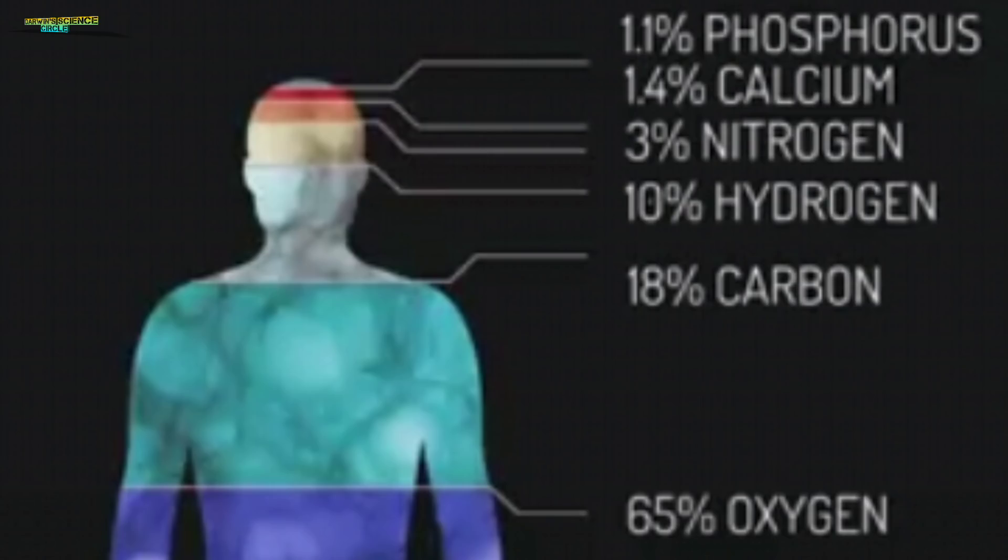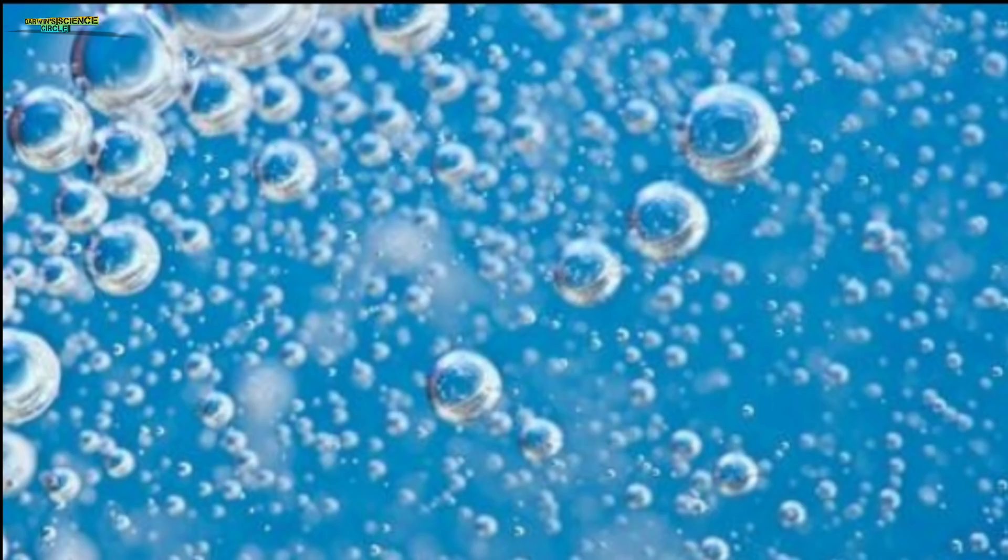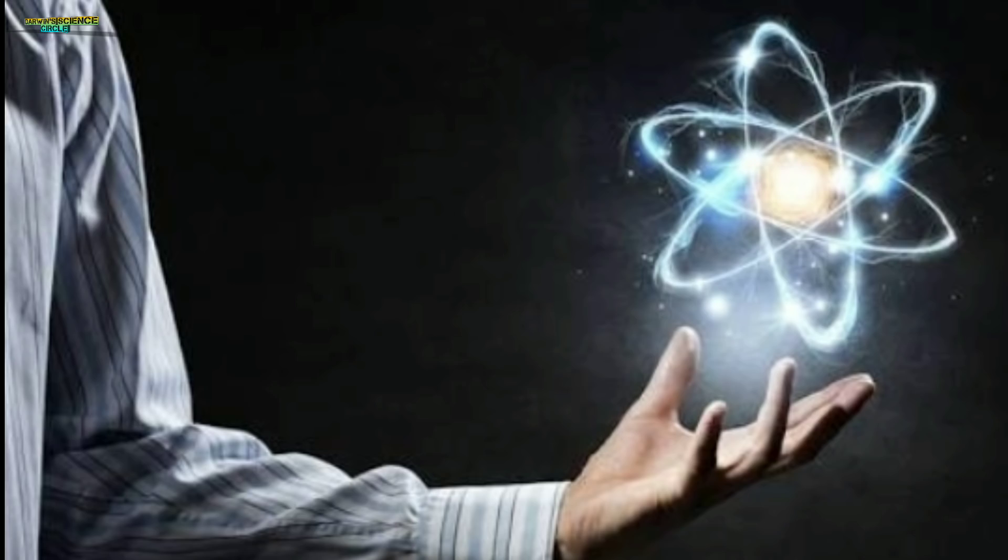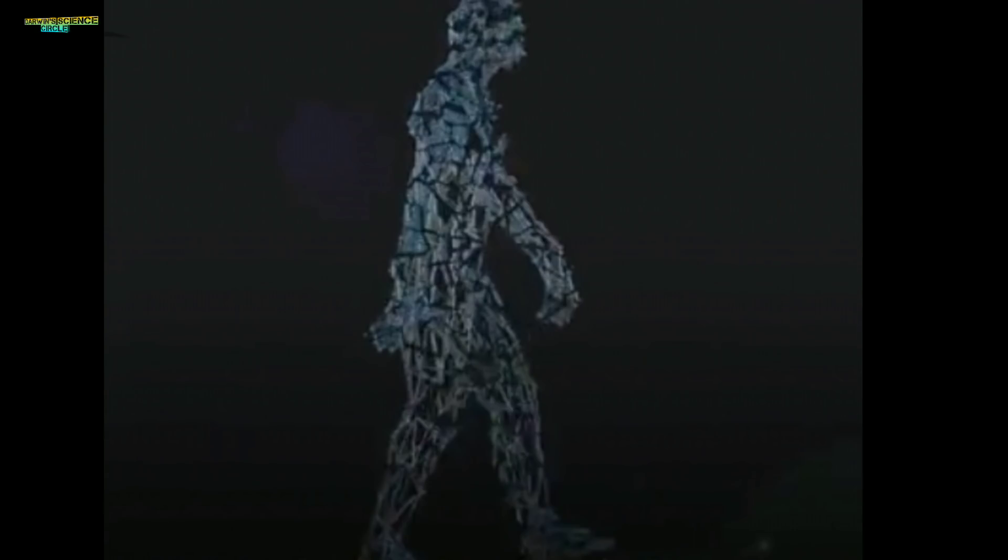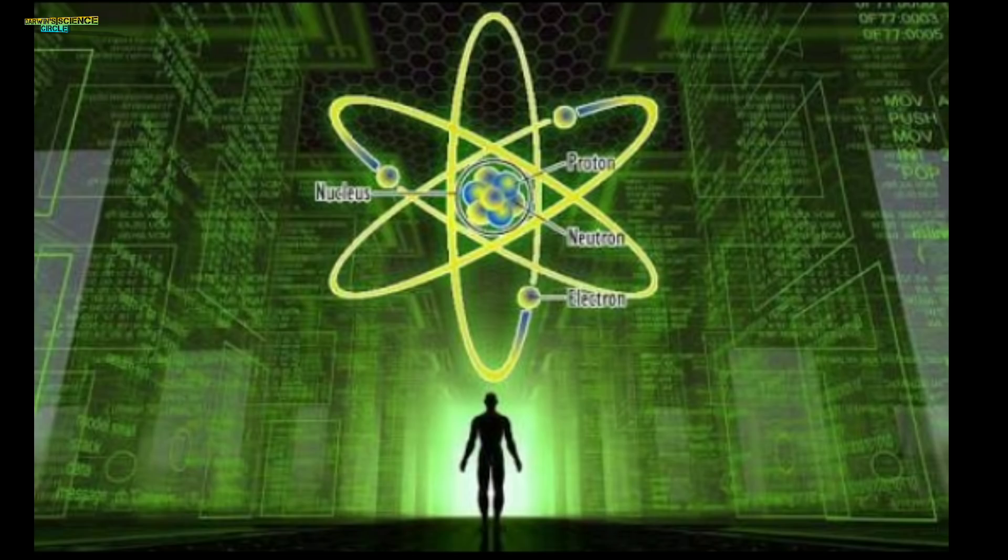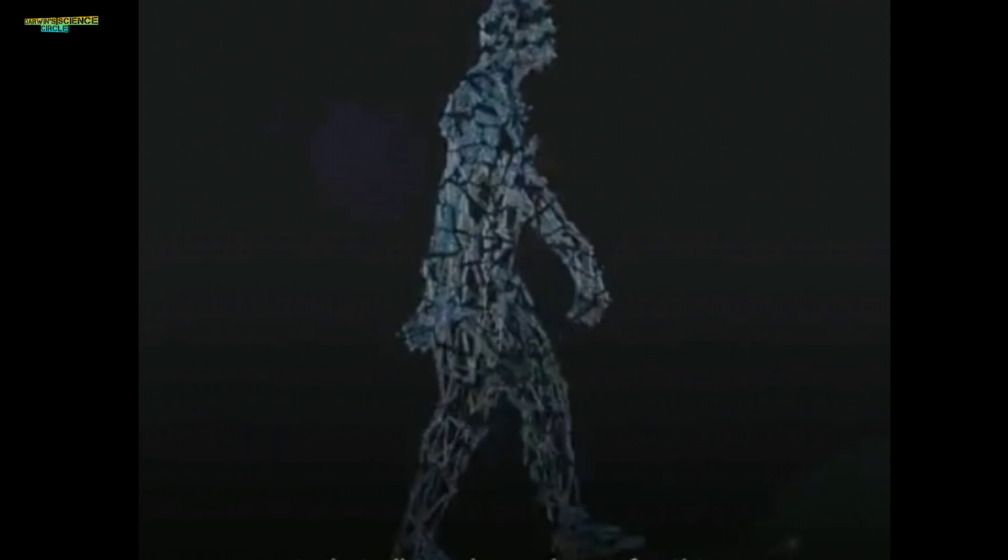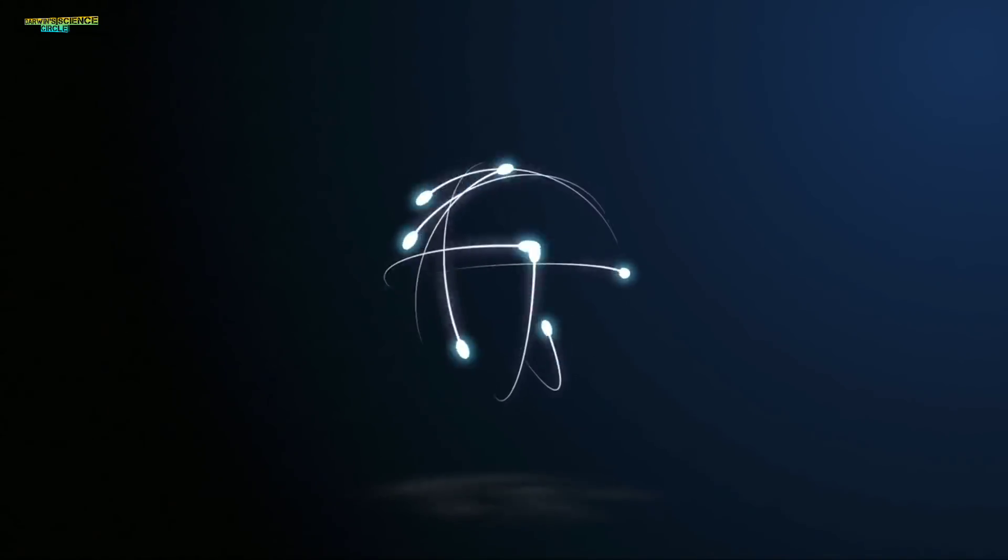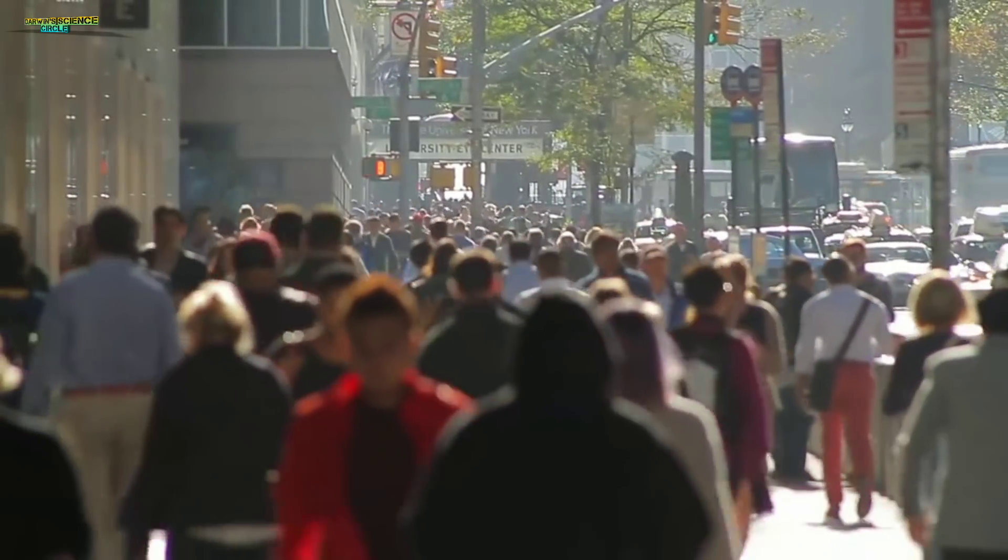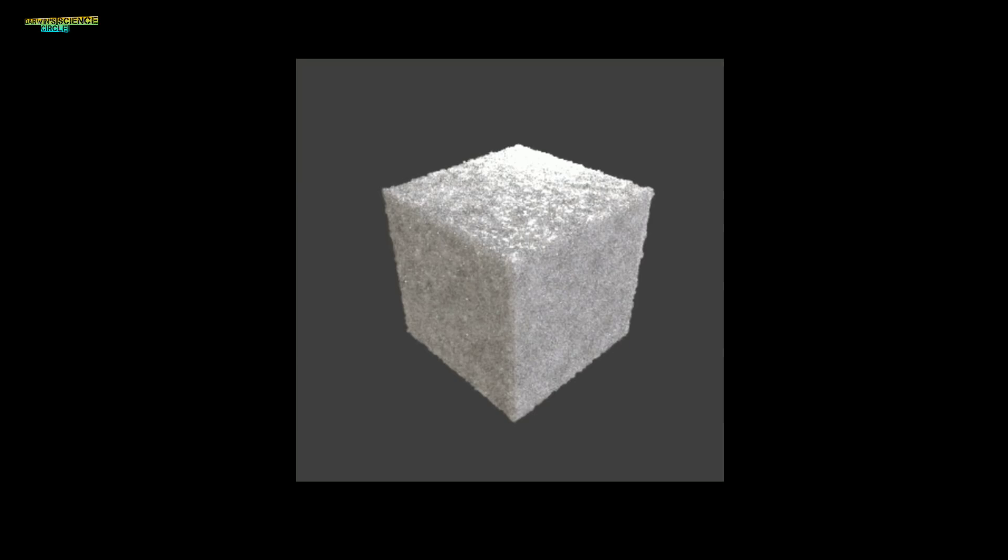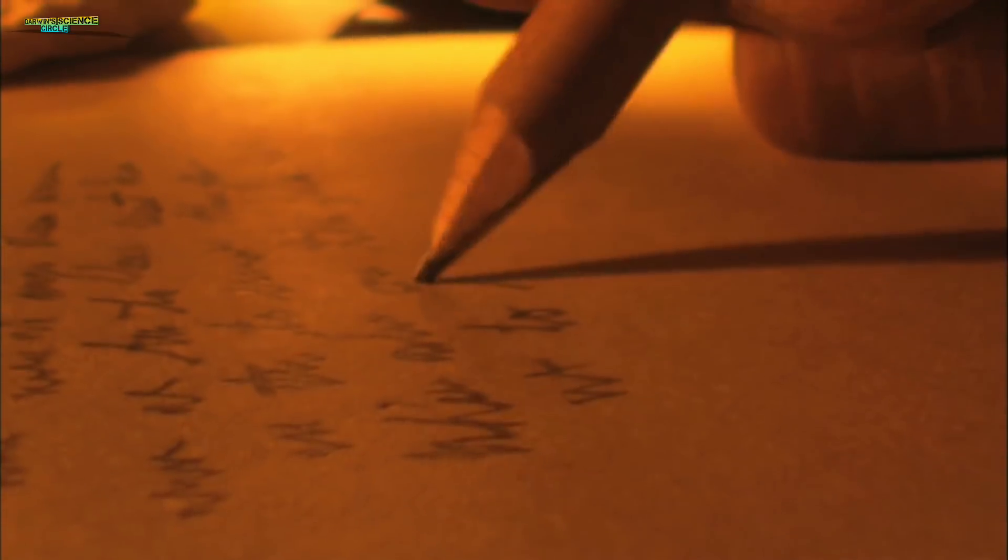About 65% of the human body is oxygen. The body composition varies, with different percentages of various elements making up our total mass.